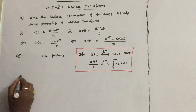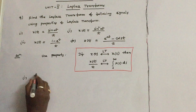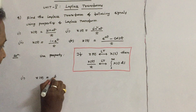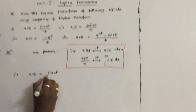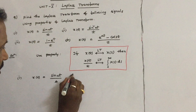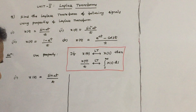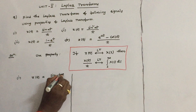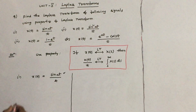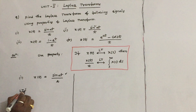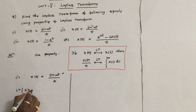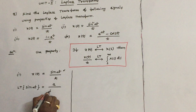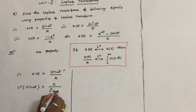Let us see the first question. X(T) is equal to sin(At) by T. In these problems, first we have to find out the Laplace transform of the numerator. So the Laplace transform of sin(At) is A by (S² + A²).